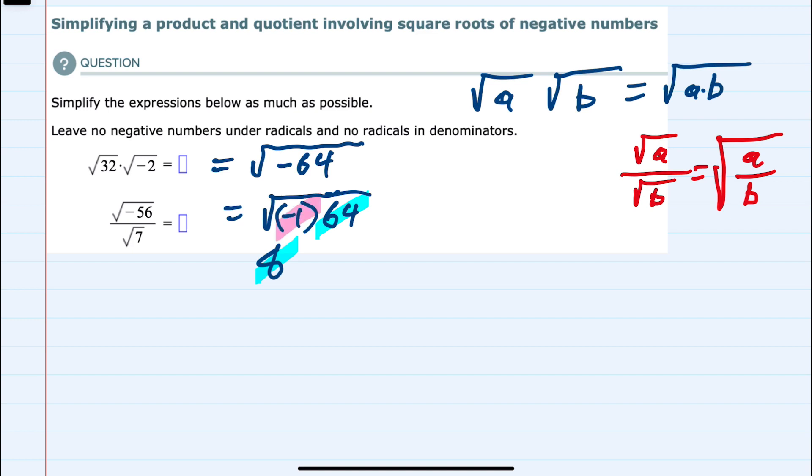And since the square root of negative 1 is i, we have simplified to having 8i.